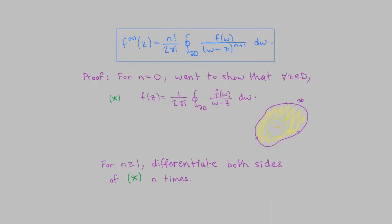If n is greater than zero, we can differentiate both sides n times. We can justify bringing the derivative with respect to z inside the integral sign, and that gives exactly the formula we're looking for. Not every region d satisfying the hypotheses looks like the one illustrated, but these are the main ideas in the proof, so that essentially completes it.